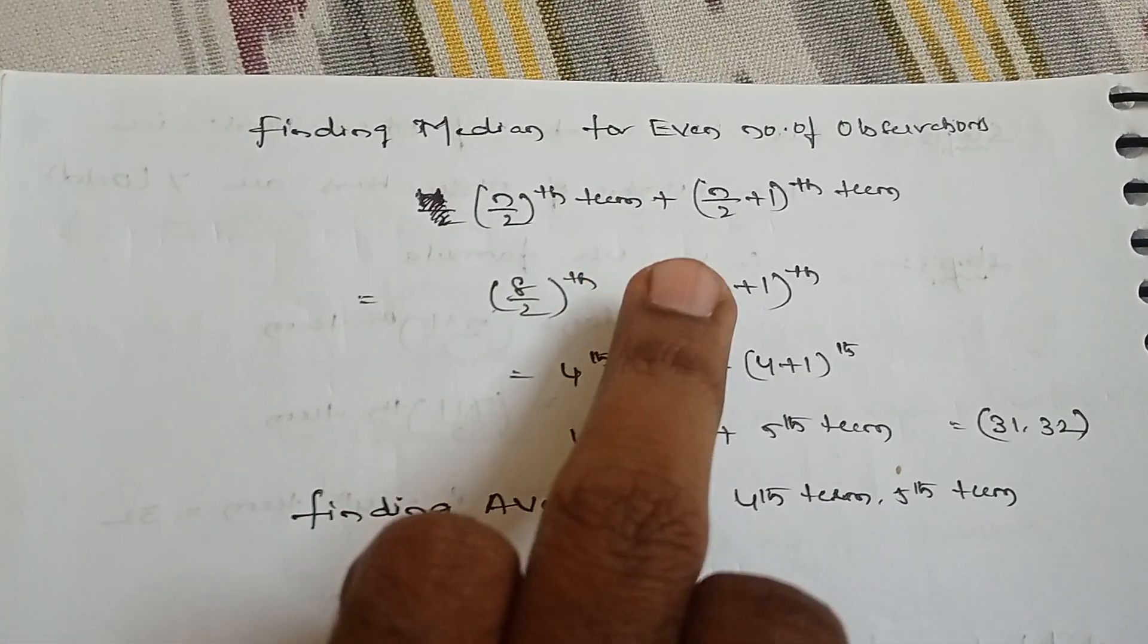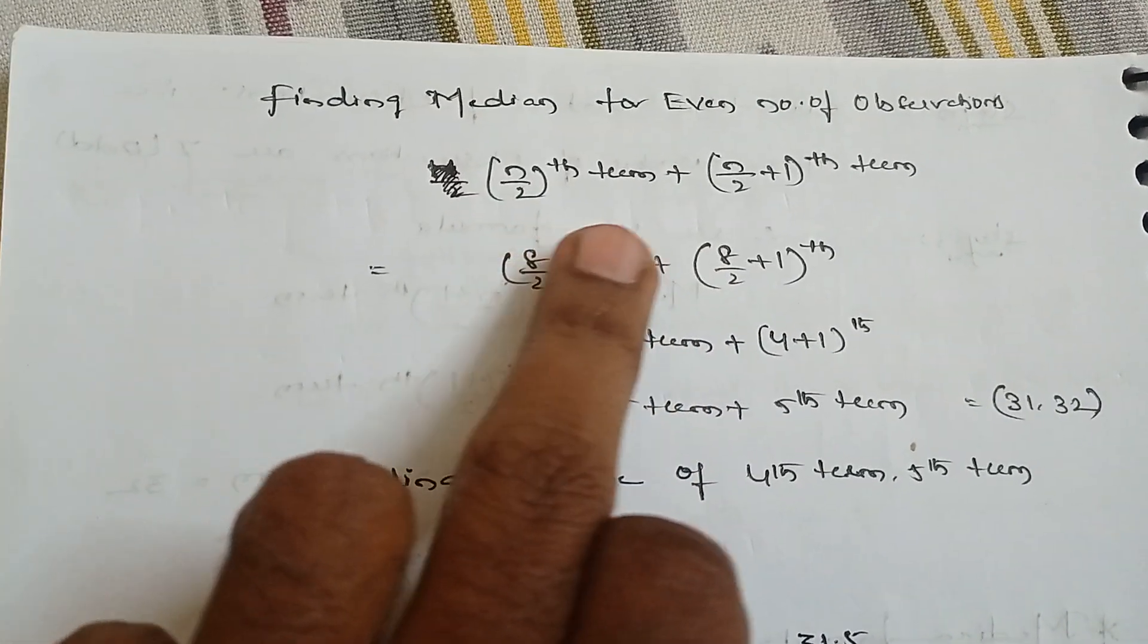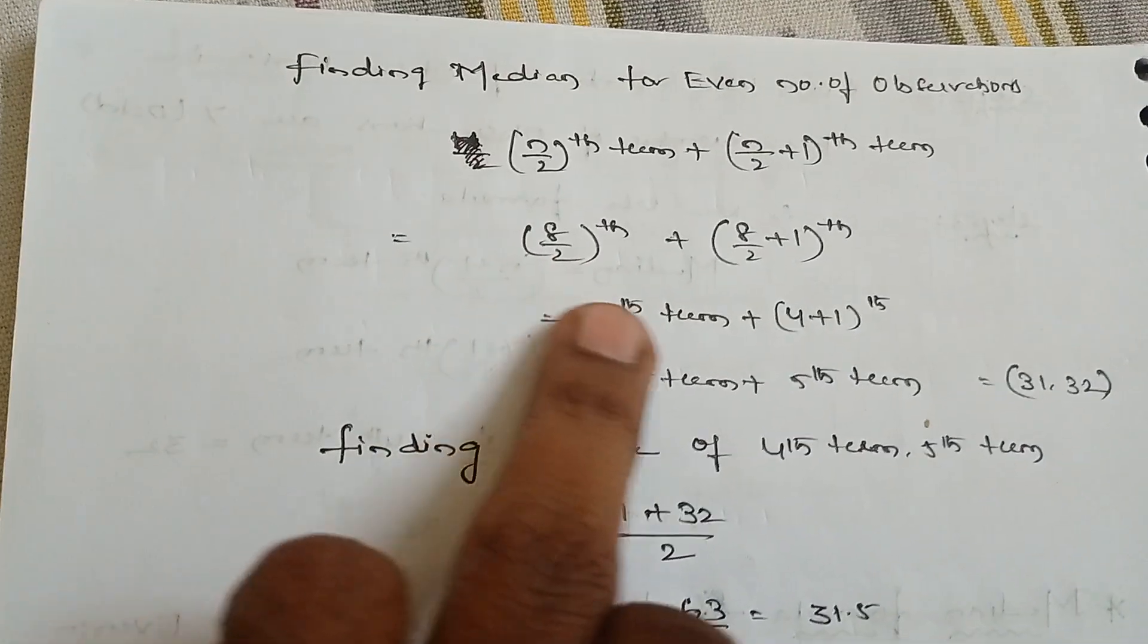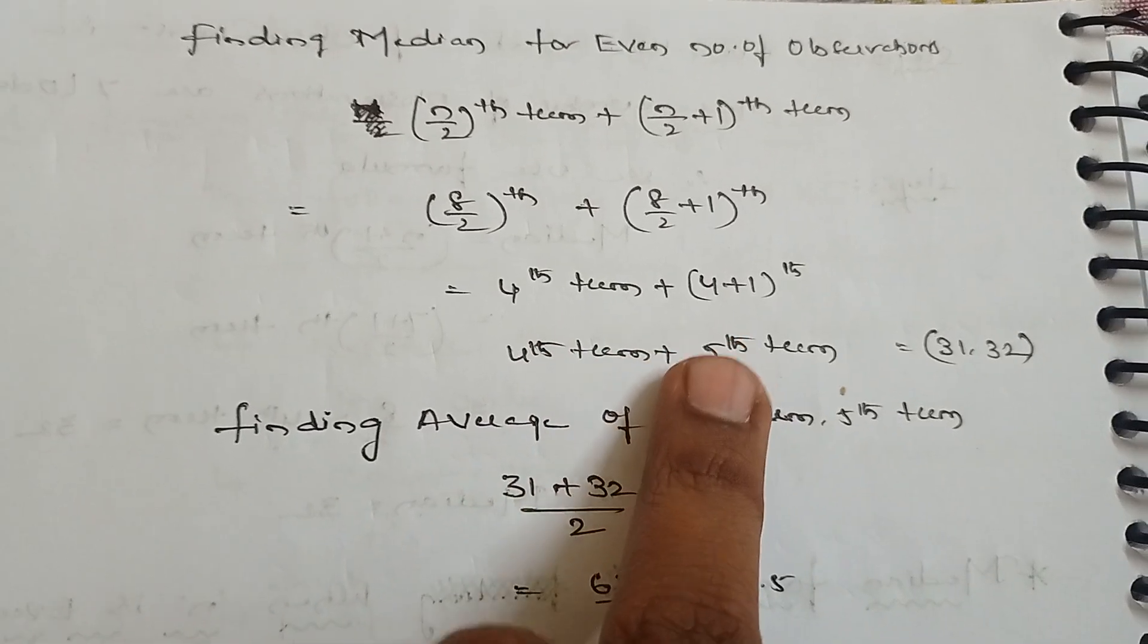For even number of observations, we use (n/2)th term plus (n/2+1)th term. That is (8/2)th plus (8/2+1)th, which equals 4th term plus 5th term.